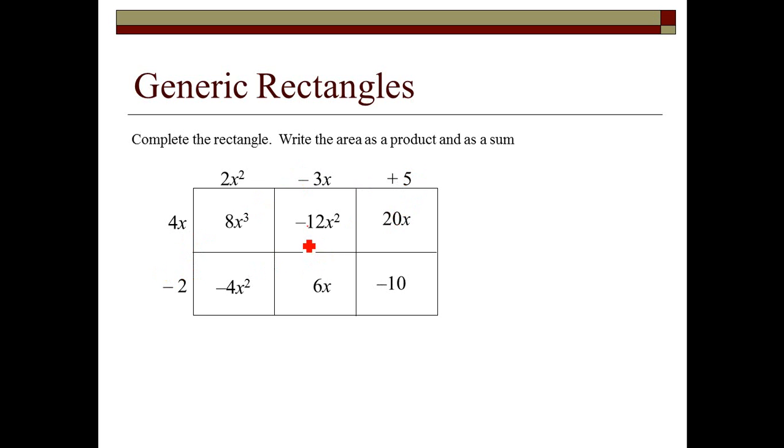So now we're going to write this as a product. My product is the outside. So I've got 4x minus 2 times 2x squared minus 3x plus 5. That's the product. The sum is what all the inside adds together.